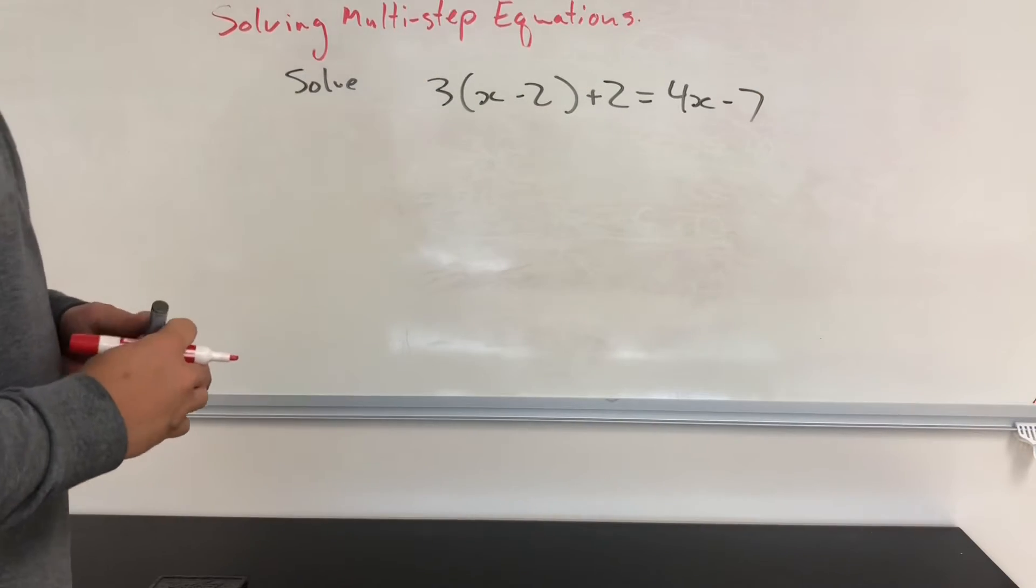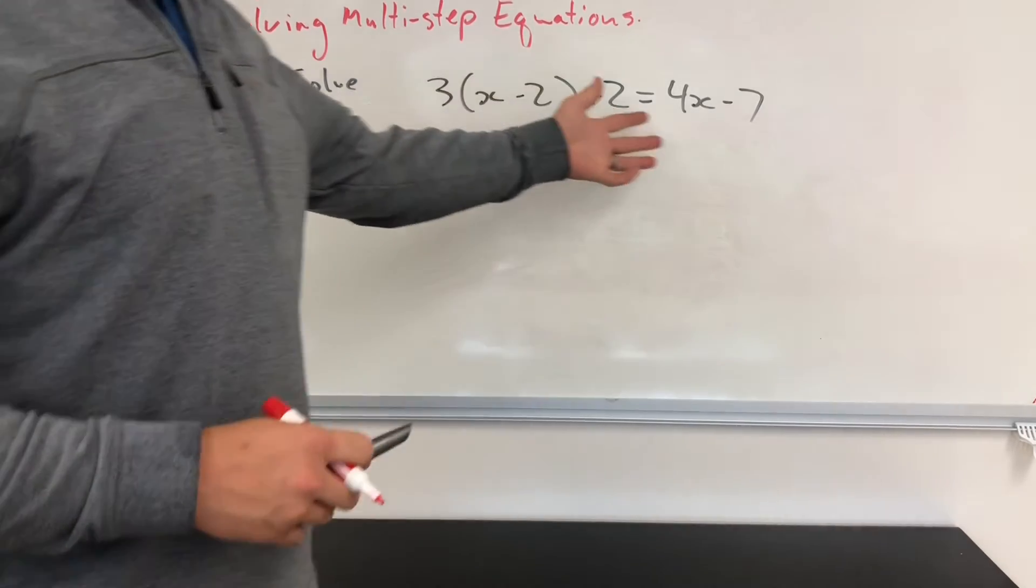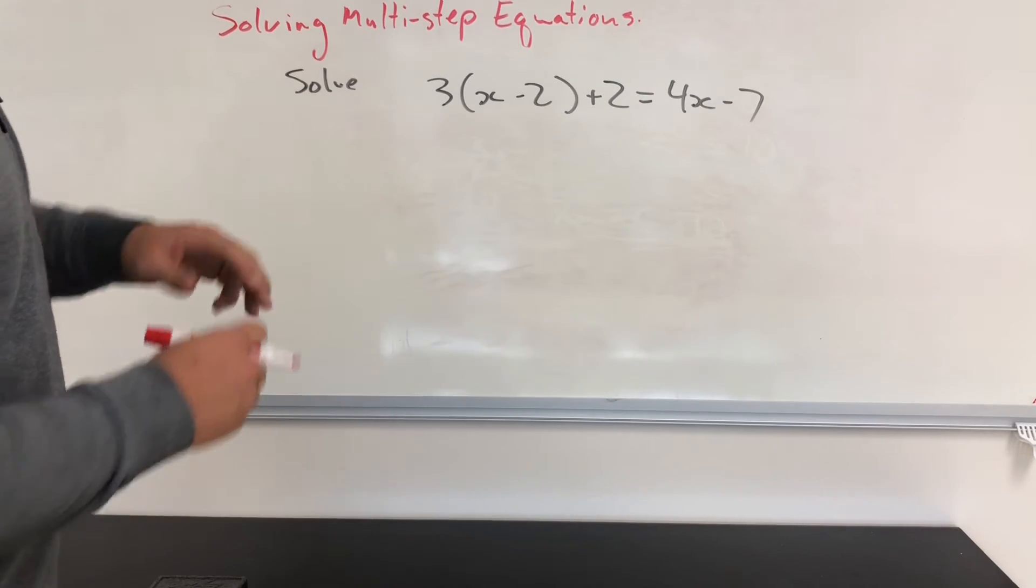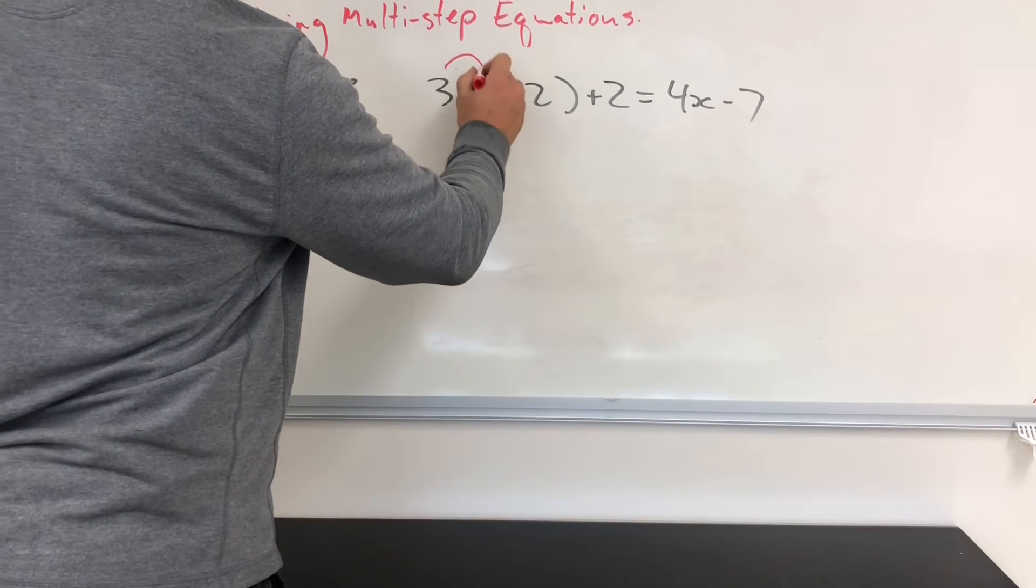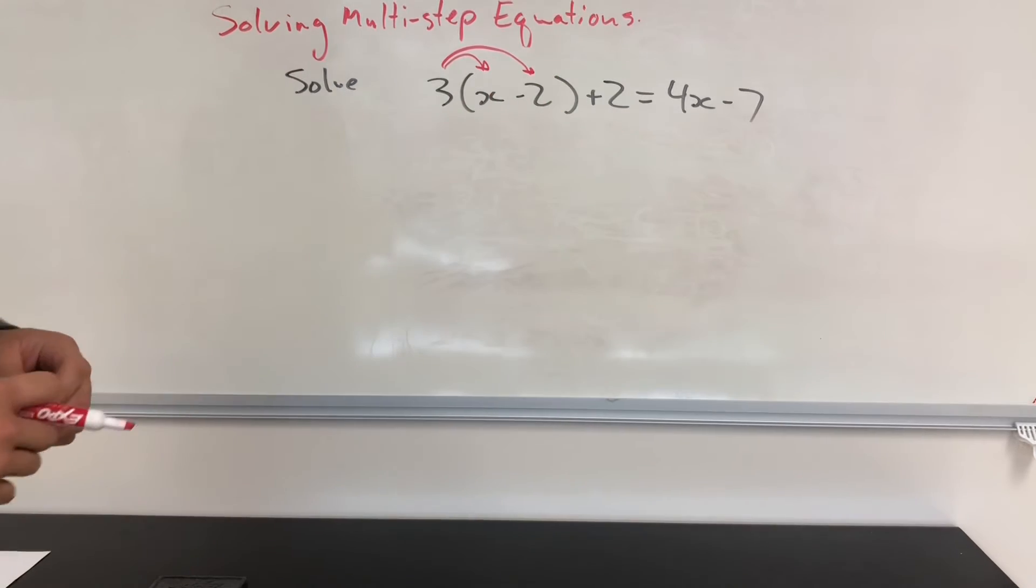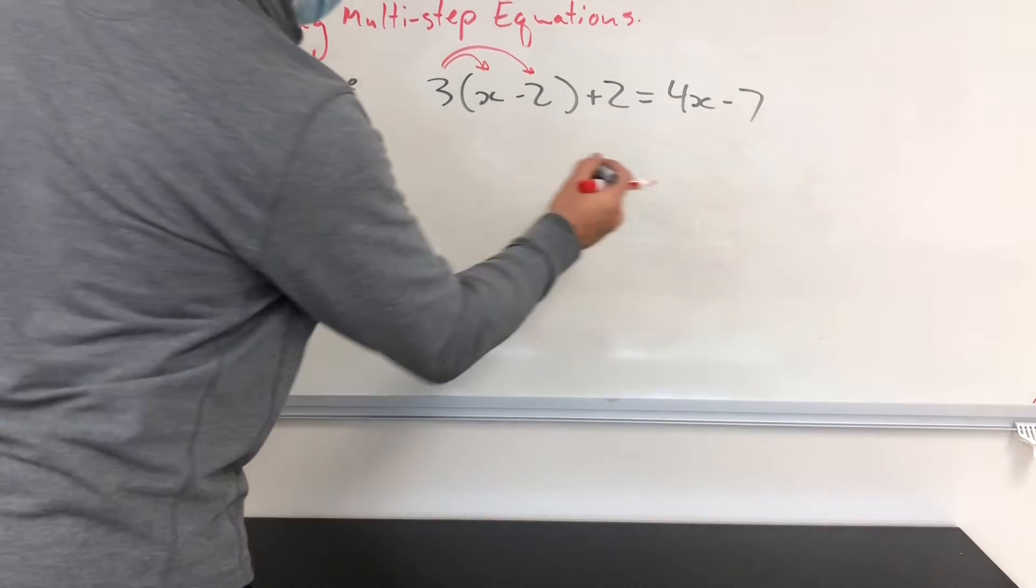Suppose I have a problem like this. And so I've got 3 times something is equal to something else here. What I have to do first is I actually have to take into account this set of brackets. I need to clear it up. So I need to make this problem look like my first example. I'll do that using the distributive property.